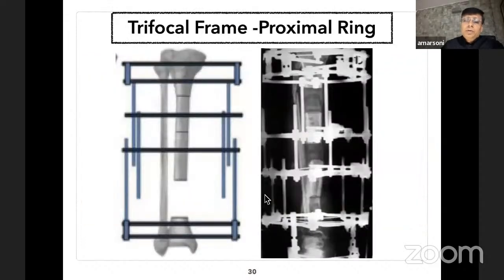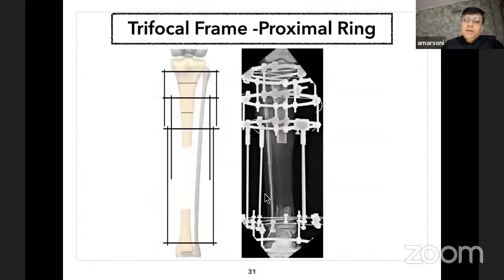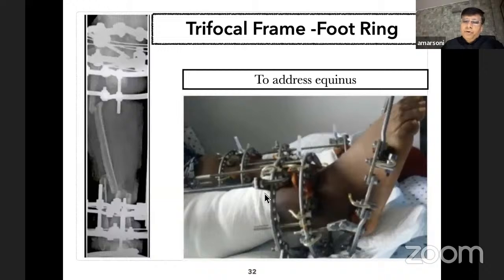Dr. Ketani said that in tandem trifocal osteosynthesis it is the proximal fragment that bears the burden of distraction, so one should have very good stability at the proximal fragment. He advised using a double ring at the proximal fragment. Since our Indian patients are not of such long stature, at times we have to do a double cortical ring with a single ring proximally, so three wires and two half-pins will give adequate stability in the most proximal ring.